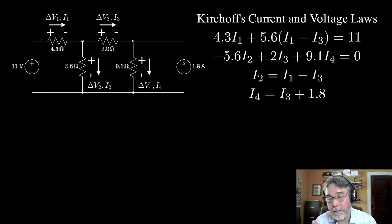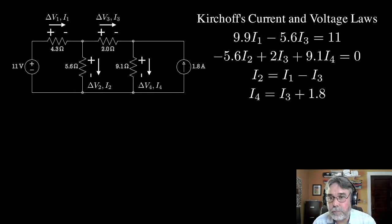Now you'll notice I've got, if I distribute that 5.6 over those binomials there, I can move the I1s together. And if I do that, I get the following expressions. So I get 9.9 times I1 and I get minus 5.6 times I3. Then I can do the same thing for the second equation.